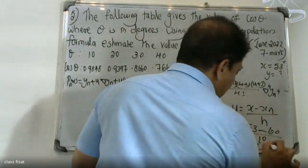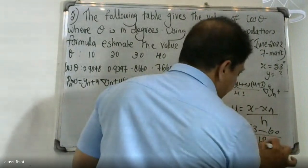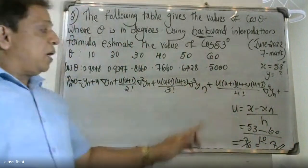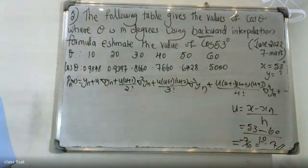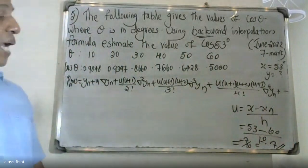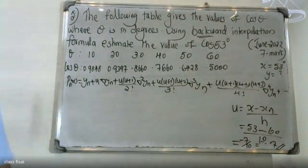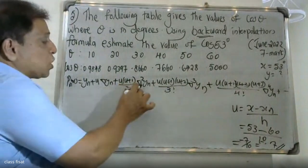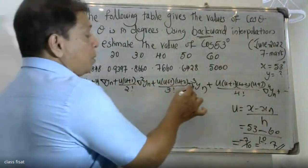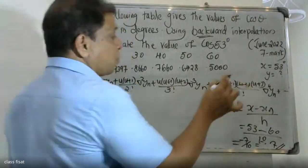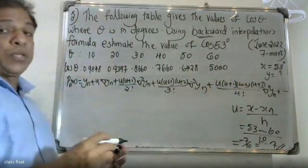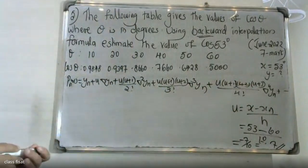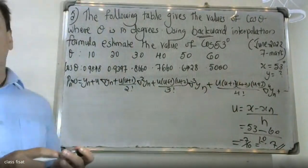Computing u: u = (x - xn)/h = (53 - 60)/10 = -0.7. So u = -0.7. We now set up the difference table columns: Δy, Δ²y, Δ³y (del cube), and Δ⁴y (del raise to four).